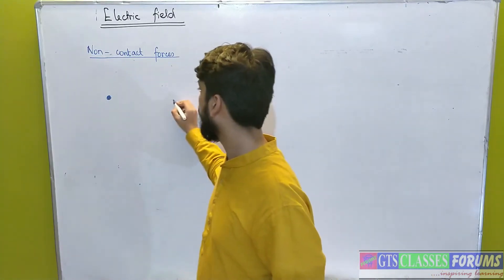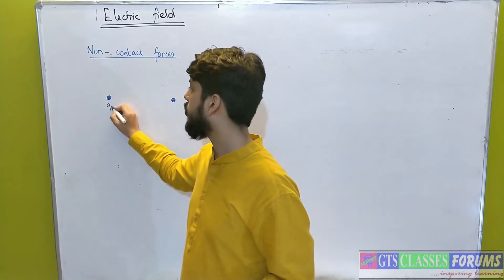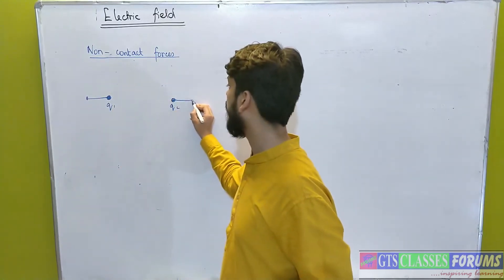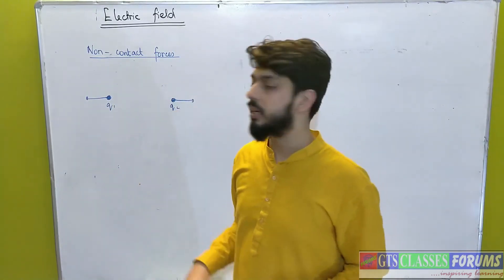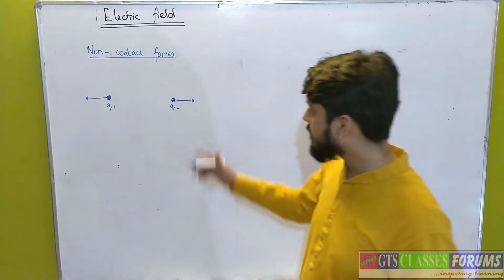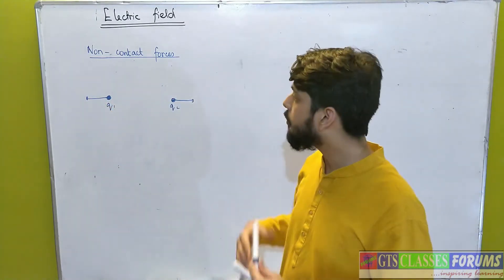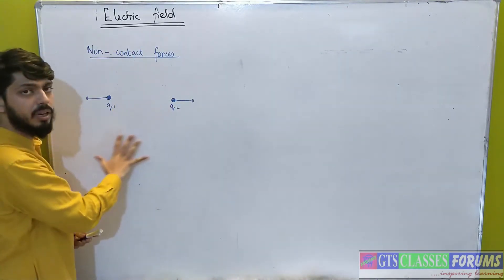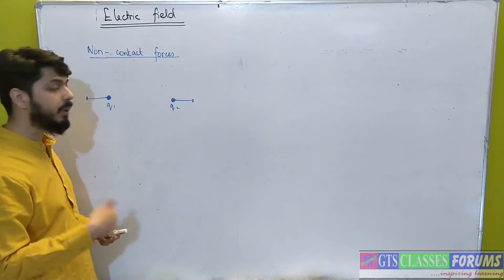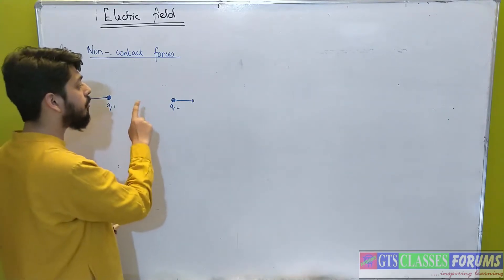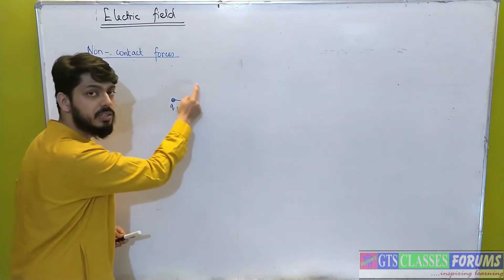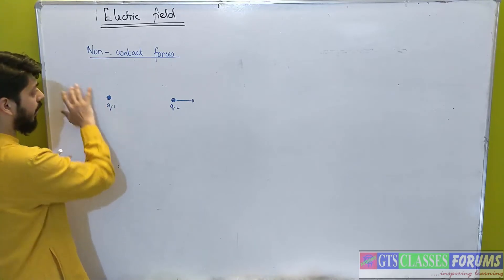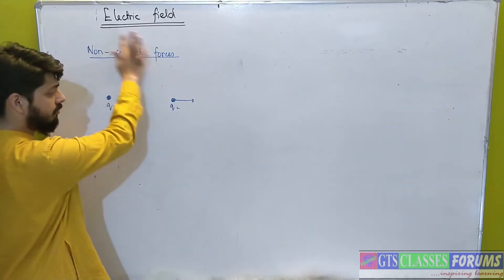One charge exerts force on another charge. Suppose this is Q1 and this is Q2. If they are the same nature they repel, and if they are opposite nature they attract. But how do they attract? We say that this charge sets up a field around it, and when we talk about this charge setting up a field, we are talking about the cause of this force — what is the cause of this force?